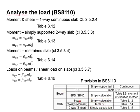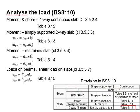For a two-way slab that is simply supported, the moment can be obtained by referring to table 3.13. The UDL acting on the beam can be obtained from table 3.15, which is also used for shear load. Table 3.14 is for the moment, and table 3.12 is for the one-way continuous slab.